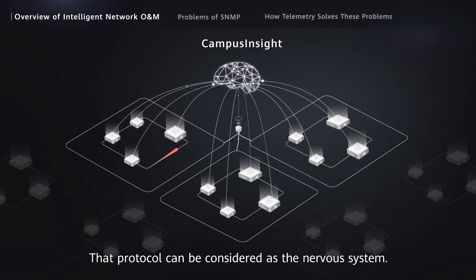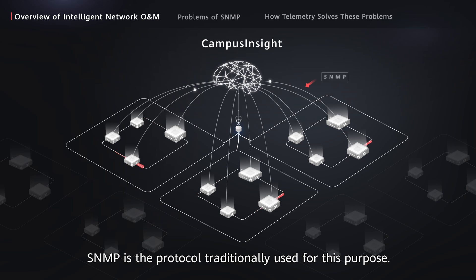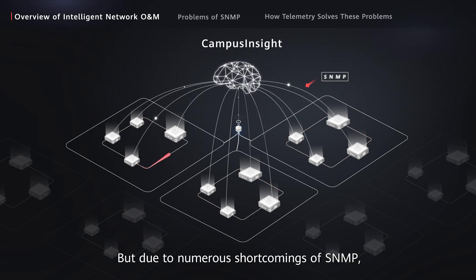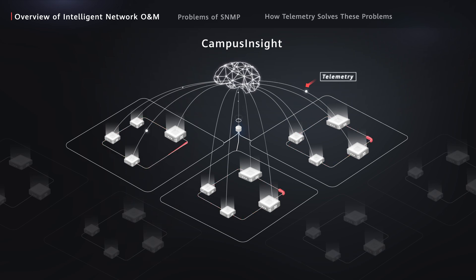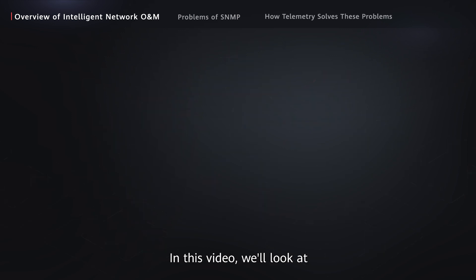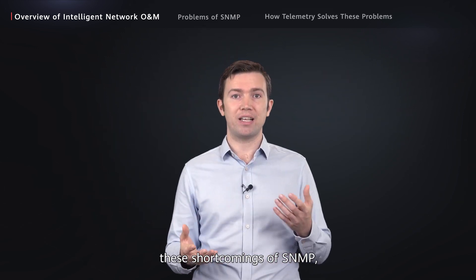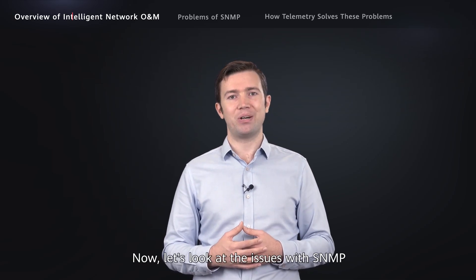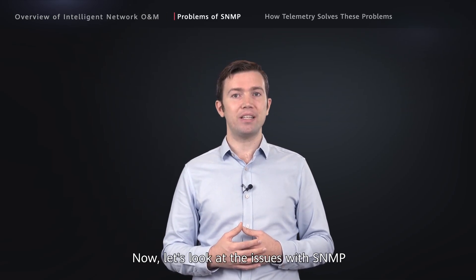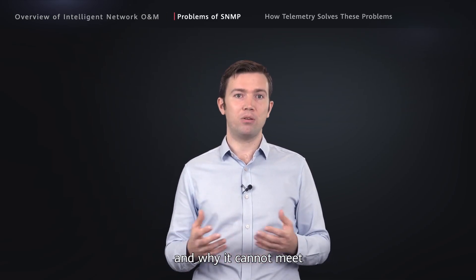That protocol can be considered as the nervous system. SNMP is the protocol traditionally used for this purpose, but due to numerous shortcomings of SNMP, it is gradually being replaced with telemetry. In this video, we'll look at these shortcomings of SNMP and how telemetry helps to overcome them. Now, let's look at the issues with SNMP and why it cannot meet the requirements of intelligent O&M.